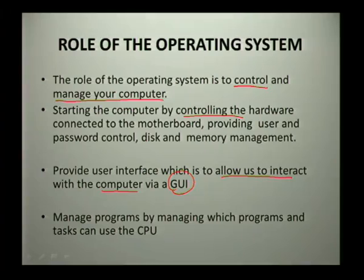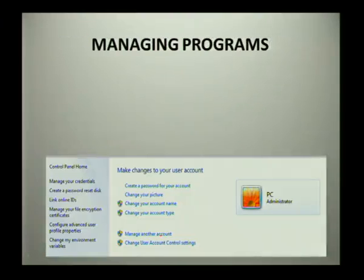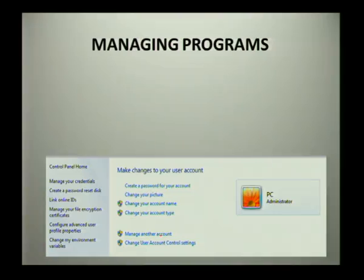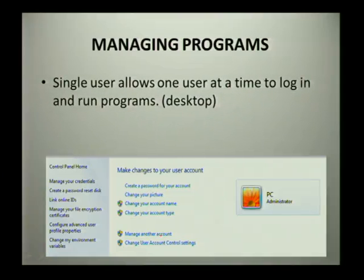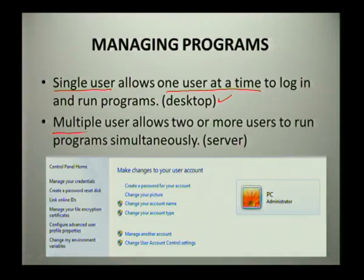Our operating system also manages programs by controlling which programs and tasks can use the CPU. When creating a user, you have the opportunity to create two different types. The first is a single user, which means the software allows one user at a time to log in and run programs, typically on a desktop computer. The second type is multiple users, which means the computer allows two or more users to run programs simultaneously — most commonly on servers.